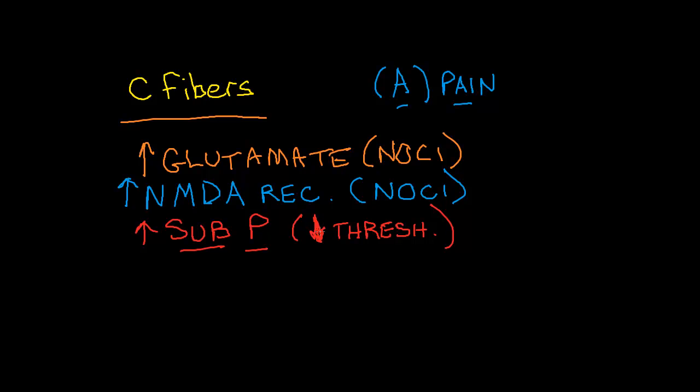So we have increased glutamate, more NMDA receptors to uptake the glutamate, substance P which is diminishing the threshold of the peripheral nociceptors, making them more likely to fire.